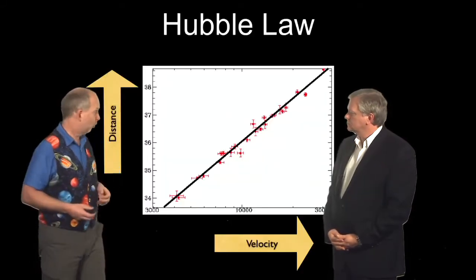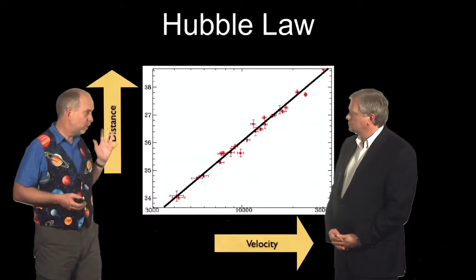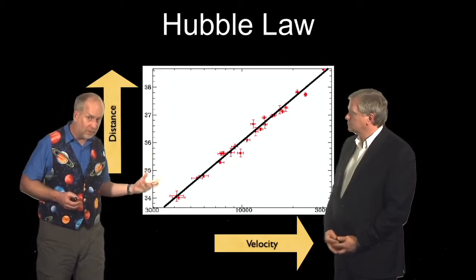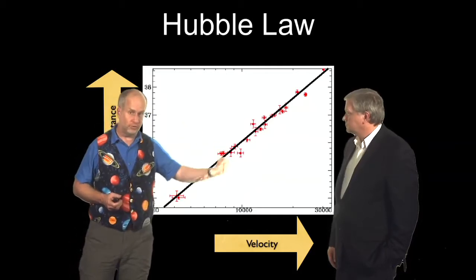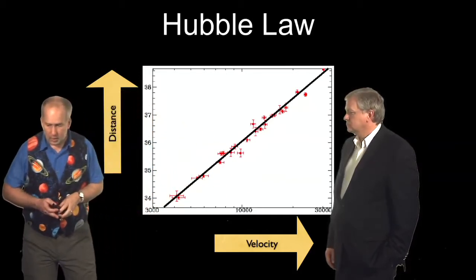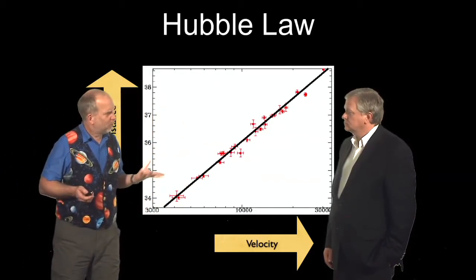Okay, so in the last video we learned about what is arguably the most remarkable graph in all of astronomy, the Hubble law. This very weird relationship that everything is moving away from us, but the speed at which it moves depends on where it is. It's proportional to its distance from us.